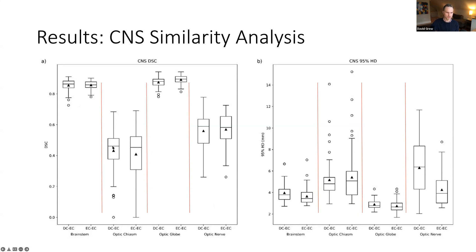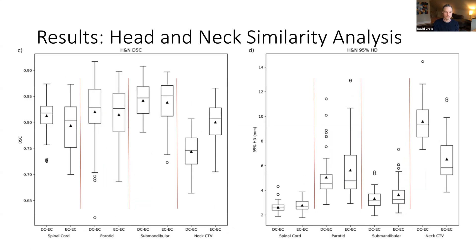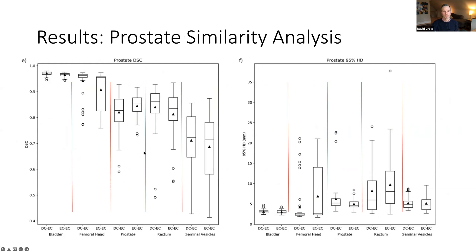Moving into head and neck: similar results — good agreement when comparing automated contours to experts and when comparing experts to each other. There was some difference in agreement when contouring targets, which is not surprising since contouring targets requires consideration of additional clinical factors. Interestingly, on this measure there was actually better agreement between the automated contours and the experts than there was among the experts alone — telling us that even experts don't always reach consensus on how targets should be drawn.